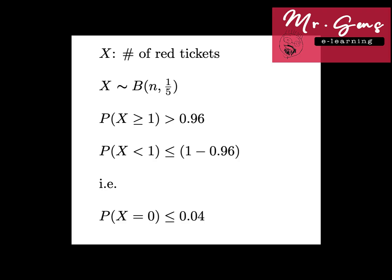That was the first method. Let's approach the question differently. Probability of X greater than 1 is given, so I will just consider the complement of this trial, which is probability of random variable X less than 1, and the probability will be less than or equal to 0.04. That means when X equals 0, probability is less than 0.04.